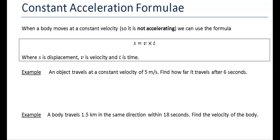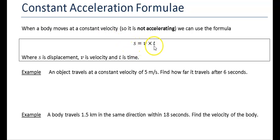We're going to look at the constant acceleration formulas, and this is for GCSE further maths. First of all, we're going to look at constant velocity. If a body moves at a constant velocity, so it's not accelerating, we can say displacement is equal to velocity times time. It's a bit like distance equals speed times time — displacement, the vector version, equals velocity times time.